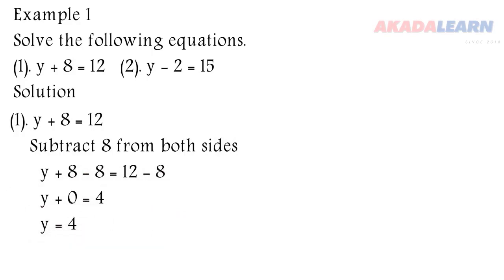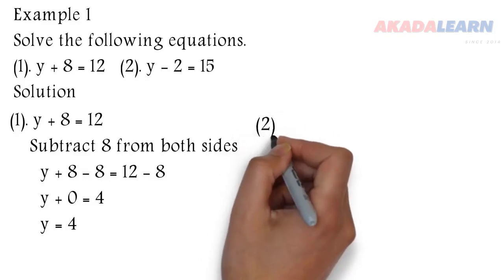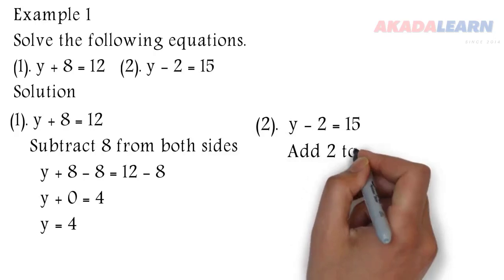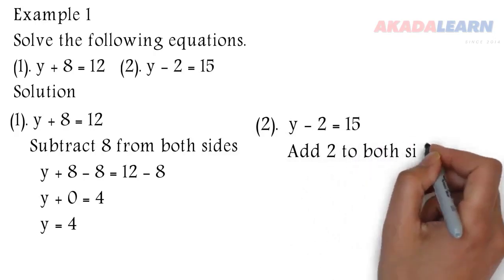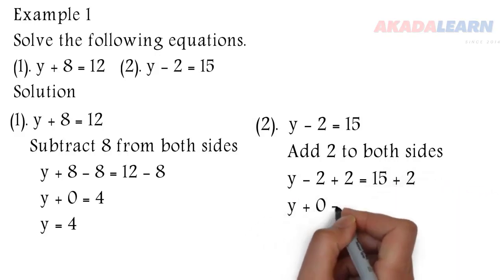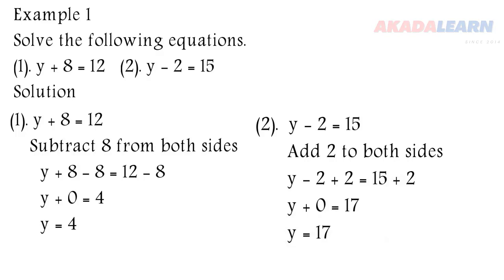So our y is equal to 4. Let's see the next one: y - 2 = 15. To make y stand alone, I need to add 2 to both sides of the equation. y - 2 + 2 is equal to 15 + 2. Minus 2 plus 2 is 0, and 15 plus 2 is 17. So our y is 17.